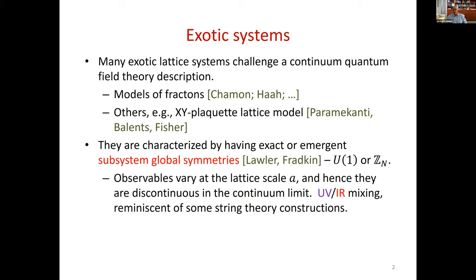This discontinuity follows directly from the existence of the subsystem global symmetry. Parenthetically, this is a mixture of UV and IR — a mixture of short-distance physics with long-distance phenomena. The long-distance behavior of the system, like correlation functions at very long distances, is very sensitive to what happens at short distances. This is unlike what we are used to in standard systems. We have also seen in the context of string theory some other systems that mix the UV and IR, where the separation in scales based on length scale is not as clear as in standard systems.